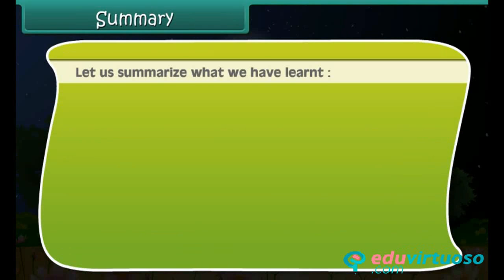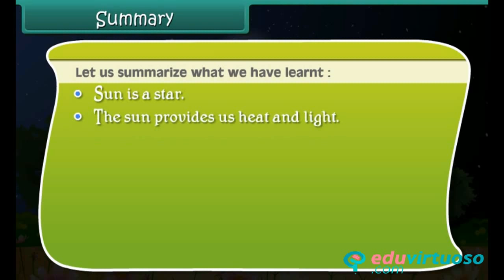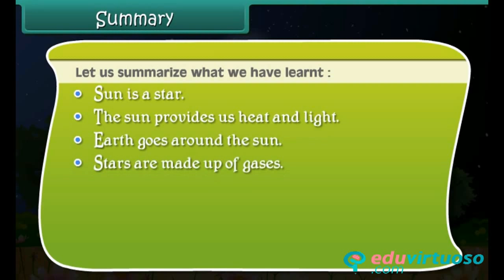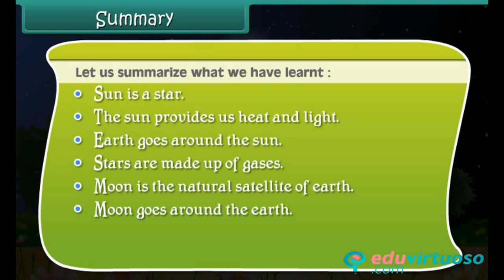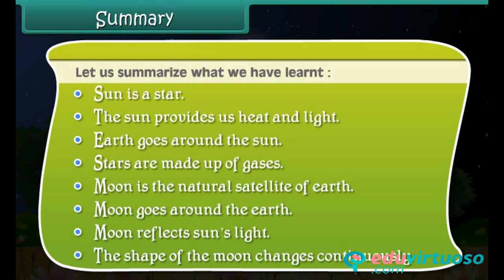Let us summarize what we have learned. The sun is a star. The sun provides us heat and light. Earth goes around the sun. Stars are made up of gases. The moon is the natural satellite of earth. The moon goes around the earth and reflects the sun's light. The shape of the moon changes continuously.